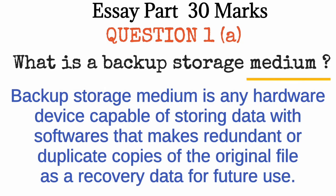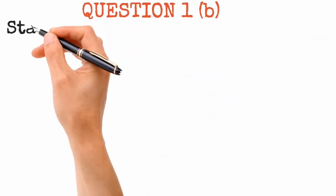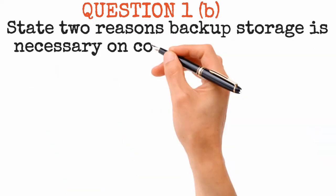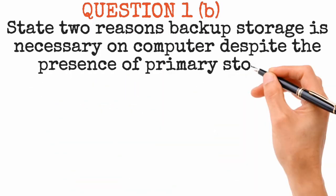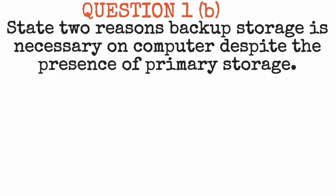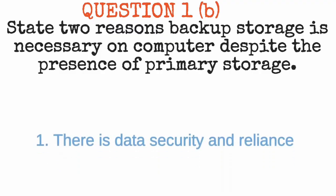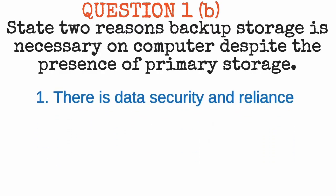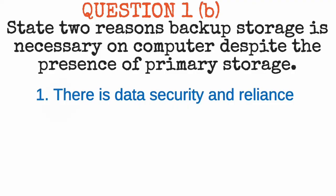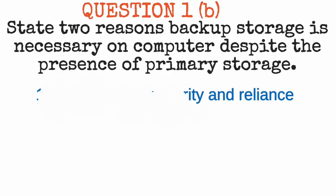Question 1b asked us to state two reasons why backup storage is necessary on a computer despite the presence of primary storage. First, we cannot rely on primary storage alone — that is why we have backup storage. This gives us data security and reliance on backup storage, meaning we are secure knowing our data is protected.